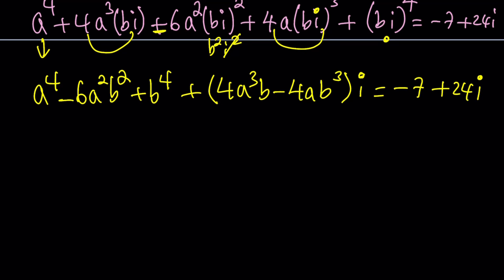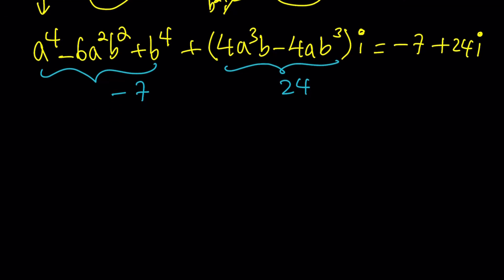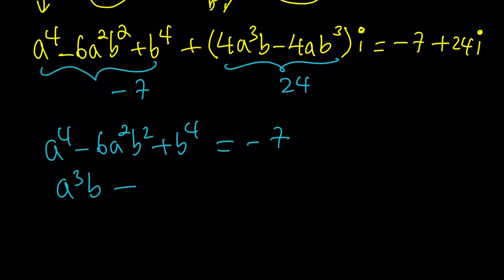Now, what are we going to do? We're going to compare the real parts. This is equal to negative 7. This is the imaginary part. It's supposed to equal 24. Nice, because 24 is divisible by 4. So I can simplify it. Let's go ahead and see what happens. After simplifying this a little bit, I get the following. This is going to be negative 7. And this, after division by 4, A cubed B minus AB cubed is going to be positive 6. It's positive. Cool.